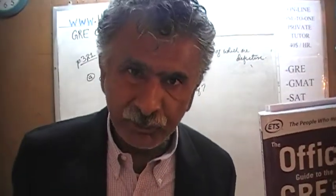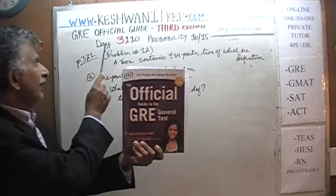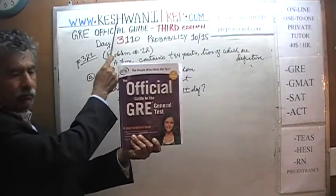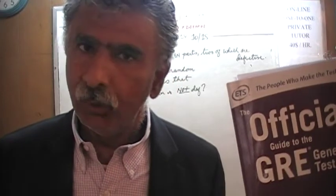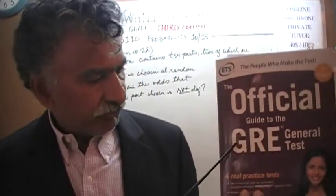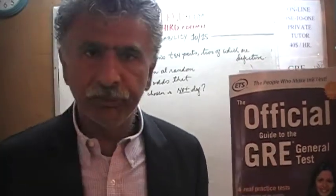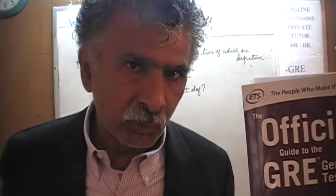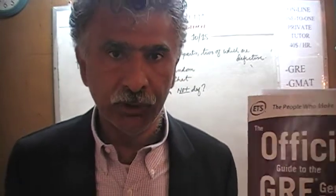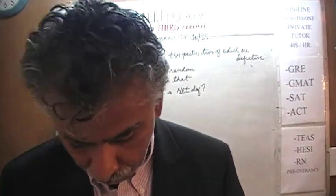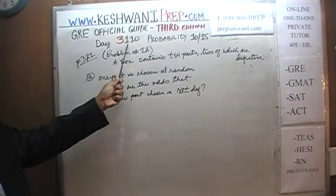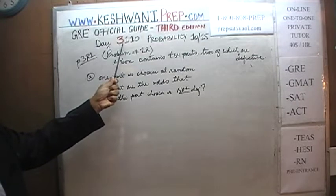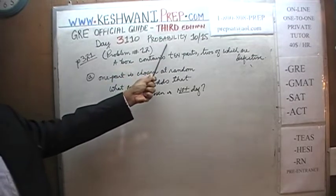Hello, my name is Keswani — that is K-E-S-H-W-A-N-I. We are here because we want to prepare for the GRE. We have been solving math problems out of this book, the Official Guide to the GRE, the third edition. If you do not own this book already, purchase it immediately — you are going to need it. Today is our lesson number 110, Day 3-110. We are on the topic of probability.